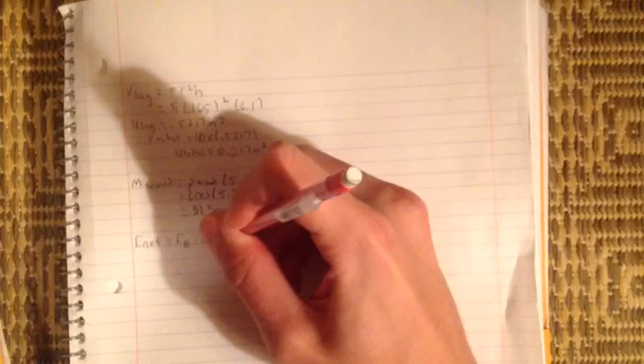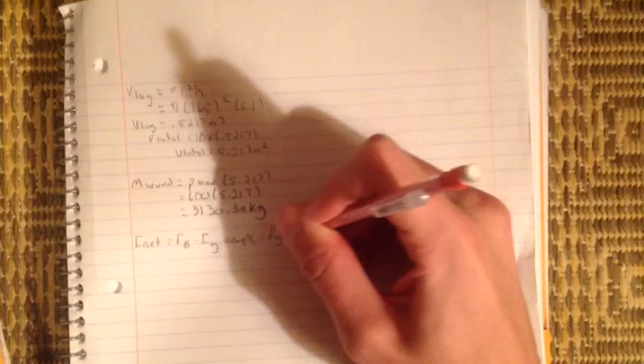Next we are finding the mass of the people. To find this we have the net force which is zero equaling the rho of water, which is the density of water, times the volume times 9.8, minus the mass of the people times 9.8, minus the mass of the wood times 9.8.